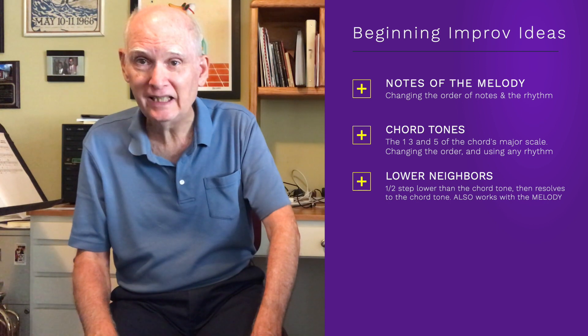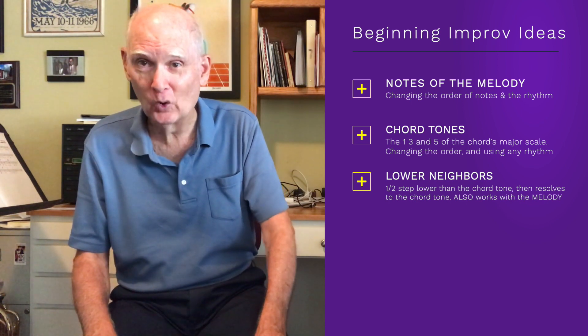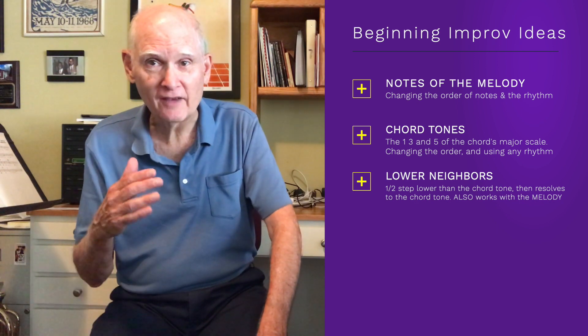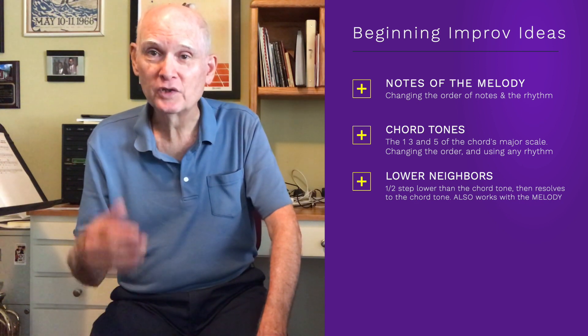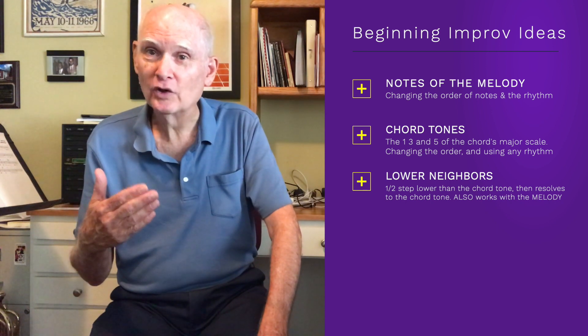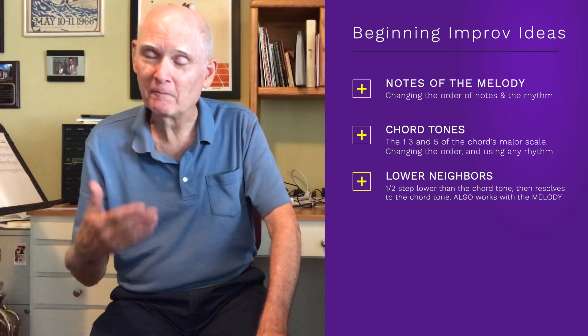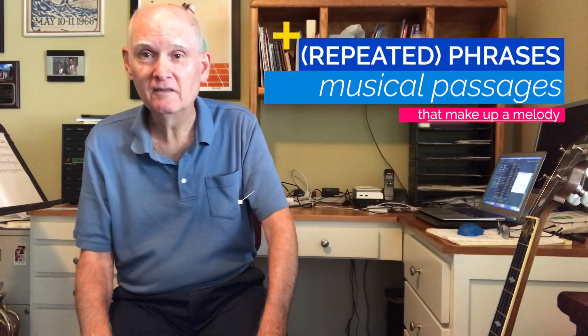We've looked at using chord tones — the one, three, and five notes of the scale of the name of the chord — and we've looked at using the lower neighbors: a half step below and then back up, or starting a half step below, or starting on the note, going down a half step, back up. And now I want to look at the concept of repeated phrases.